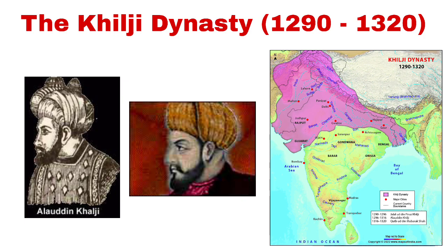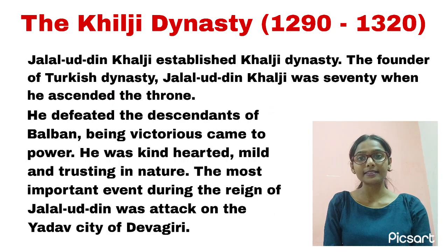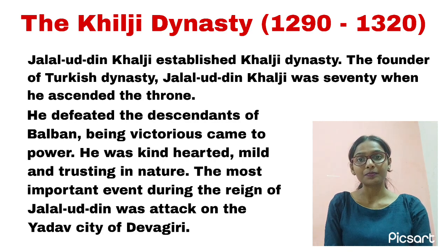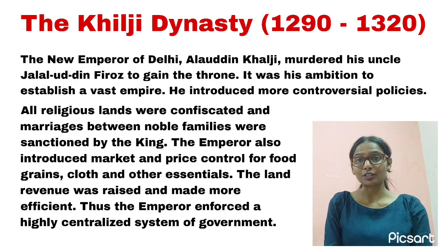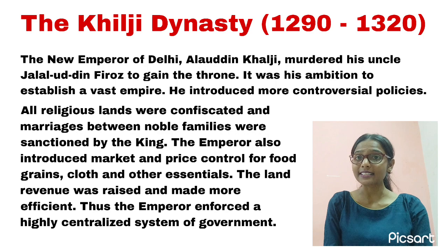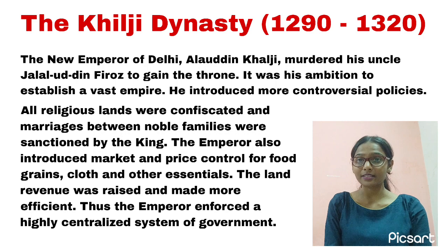After his death in 1287, Delhi came under the rule of the Khilji dynasty. The first ruler of the Khilji dynasty was Jalaluddin Khilji, who was succeeded by Alauddin Khilji, an excellent administrator who influenced many rulers of the following generation. In 1316, the death of Alauddin Khilji brought an end to the Khilji dynasty.